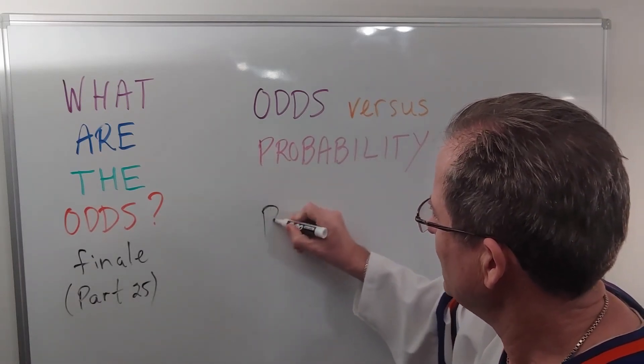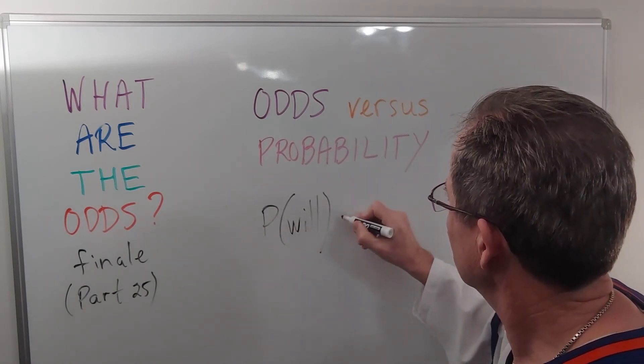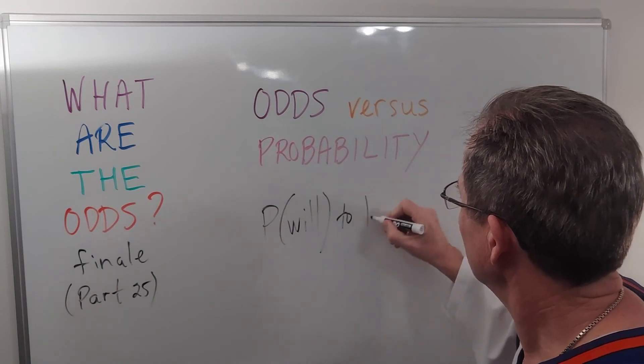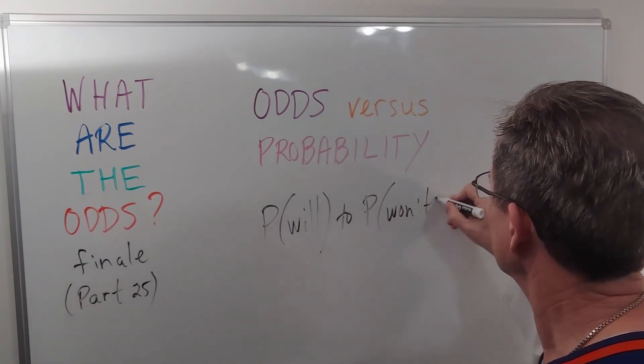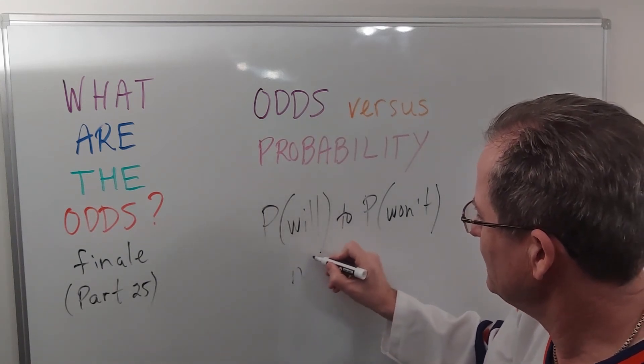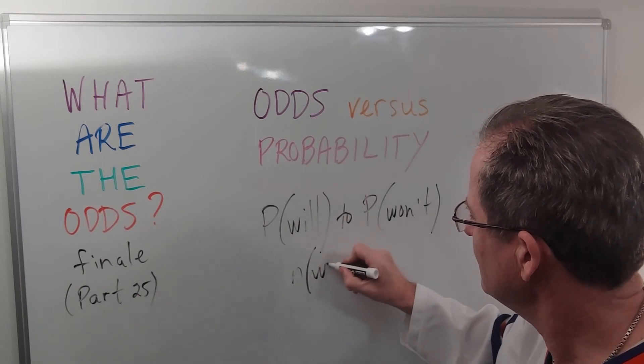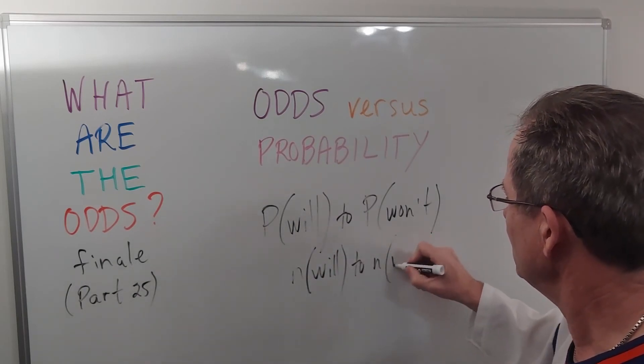Odds is the probability that something will happen to the probability that it won't happen. Or you could say the number of times it will happen to the number of times it won't happen.